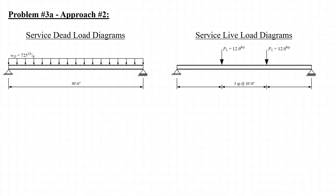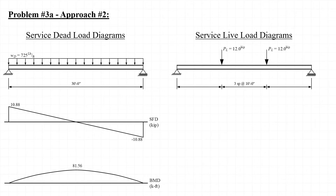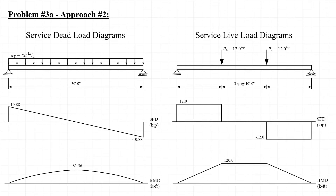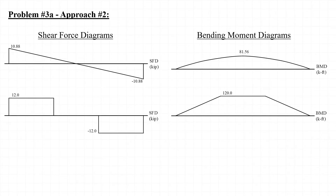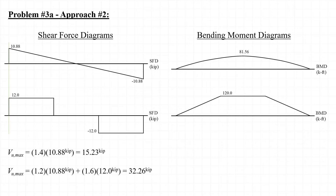Now let's solve the problem again using approach number two. Using this approach, we first do our beam analysis to determine the service level shear forces and bending moments, and then apply the factors from our load combinations to these forces and moments. I'll sketch the shear force and bending moment diagrams for the service dead load and then for the service live load, then rearrange them with both shear force diagrams on the left and both bending moment diagrams on the right. Evaluating the load combinations, load combination number two governs with a factored shear force V sub U equal to 32.3 kips.